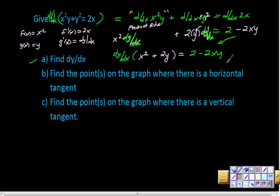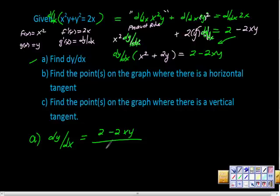And the derivative here is—from here, I'm just going to divide both sides by this thing right here, and we get this. So for a, if we divide both sides by this, we get dy/dx is equal to this 2 minus 2xy over this piece right here, this x² + 2y. And that's our dy/dx.